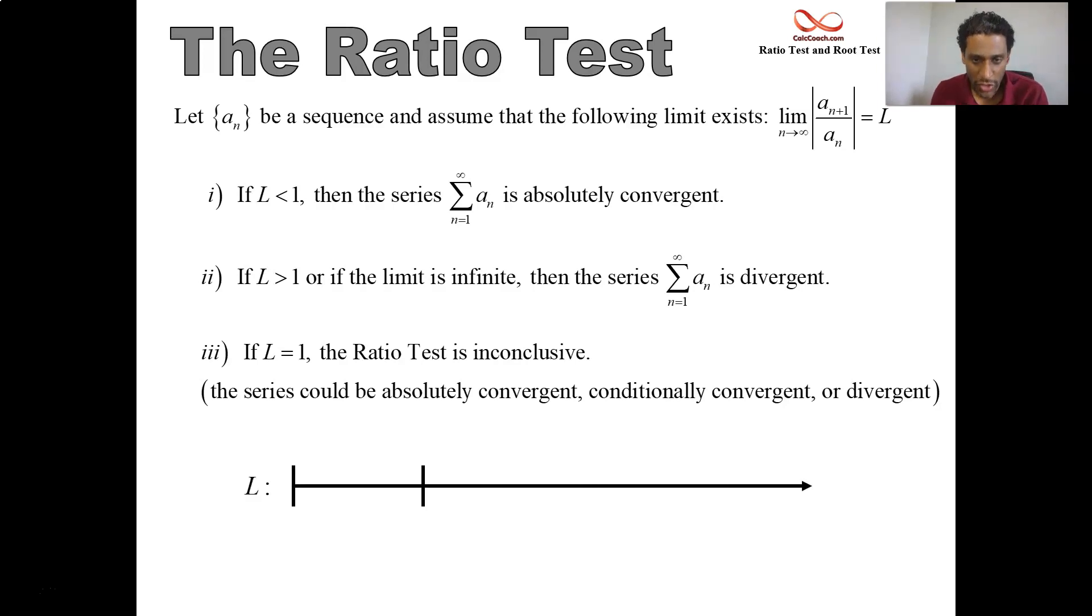Here's a nice number line that will sum it all up for you. If you're looking at the value of the limit, capital L, and you're looking at being between 0 and 1, you're convergent for your series. If you're greater than 1, you're divergent. This is opposite of the other kinds of tests that we have. The p-series is exactly the opposite of this. Make sure you don't get them mixed up. That's the ratio test.